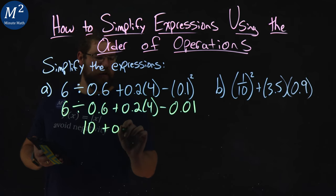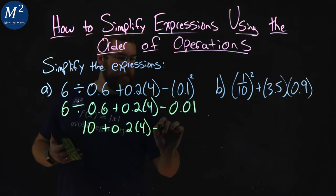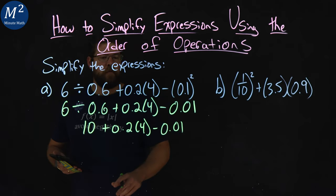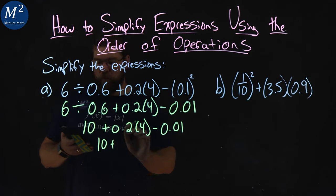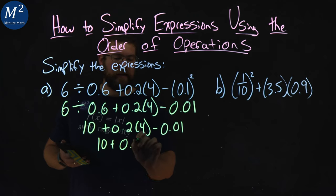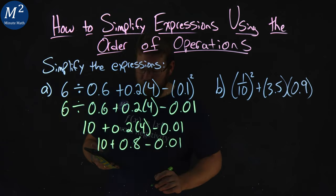So, 10 plus 0.2 times 4 minus 0.01. From there, multiplication comes next, that's right here in the middle, so 10 comes down, plus 0.2 times 4 is 0.8 minus 0.01.